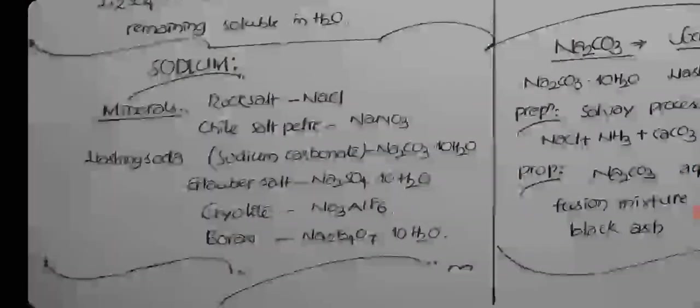Coming to sodium, sodium is Na. Minerals are rock salt, chili saltpeter. Washing soda is Na2CO3·10H2O. Glauber salt is Na2SO4·10H2O. Cryolite is Na3AlF6. Borax is Na2B4O7. In India, borax is also called Tinkal. Rock salt is sodium chloride. Chili saltpeter is sodium nitrate. Potassium nitrate is called Indian saltpeter.